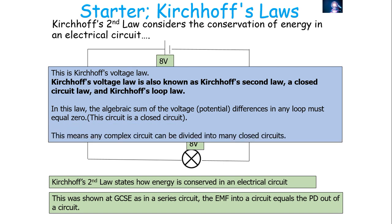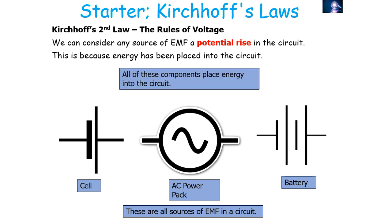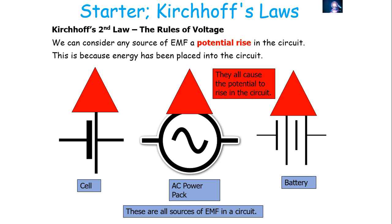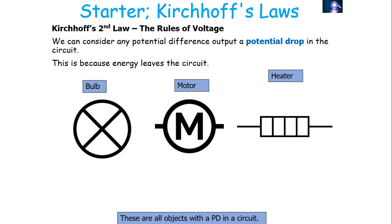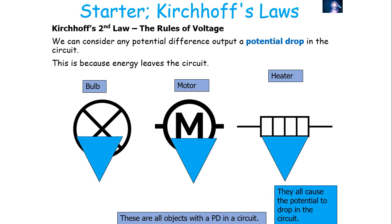We can have a complex circuit which has many loops or many paths. We can divide them into many different closed circuits or paths and use Kirchhoff's second law to understand what's going on. Any source of EMF is a potential rise in the circuit because energy per charge is being placed into the circuit — things like cells, power packs, and batteries. But you've also got transducers or potential droppers, such as bulbs, motors, and heaters, which cause energy to leave the electrical circuit, causing the potential to drop.